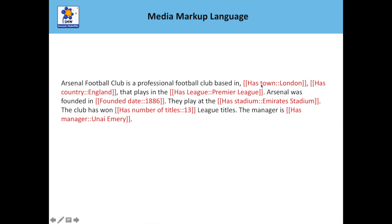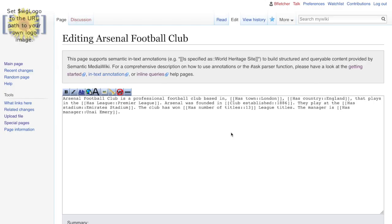You could even argue for something like 'Football club has town' because maybe you don't want London listing out football clubs on that page. Really, when you're thinking about building your wiki, you need to think about these properties. Don't worry — you can always retrospectively change them, but it is a bit of a pain, so it's nice to get it right first time. Let's go to the wiki page and actually edit this and show you what happens.